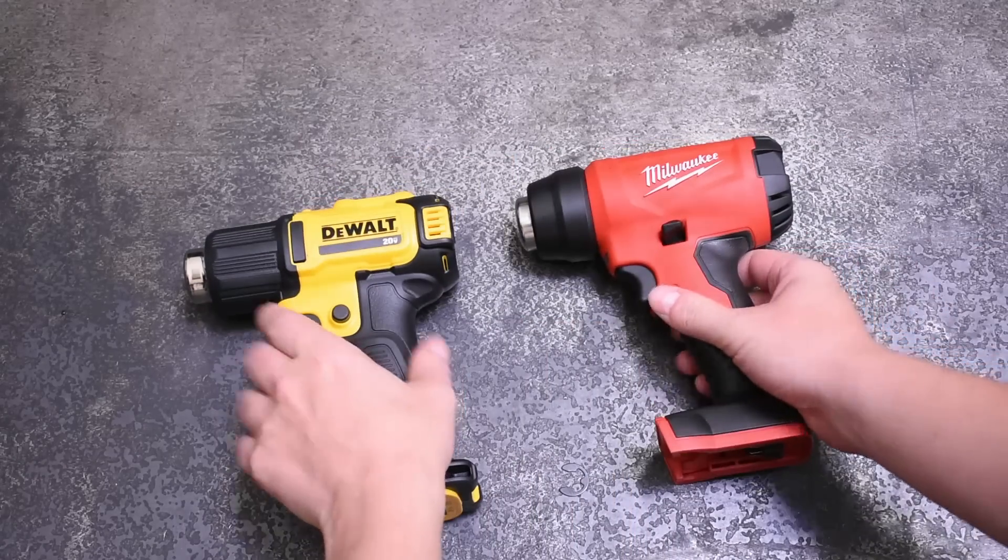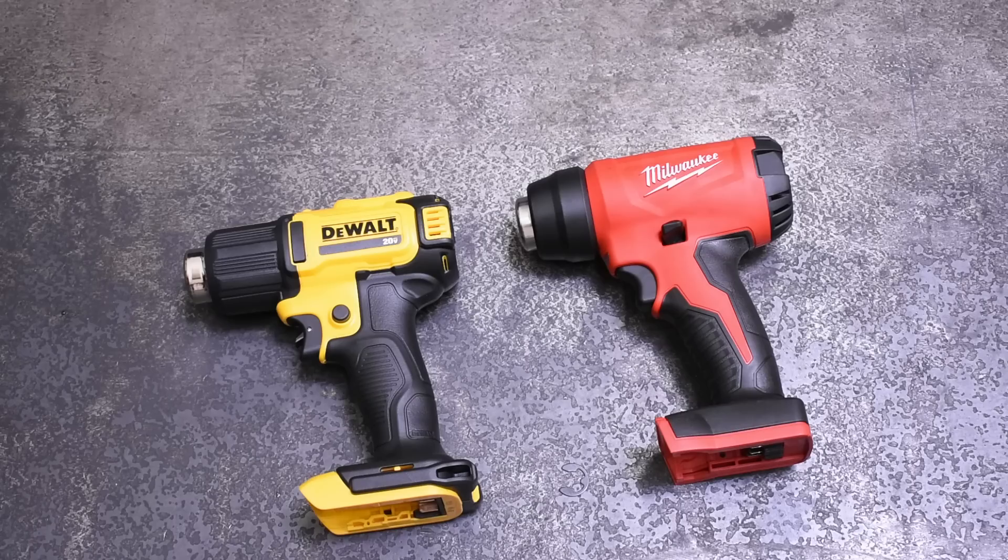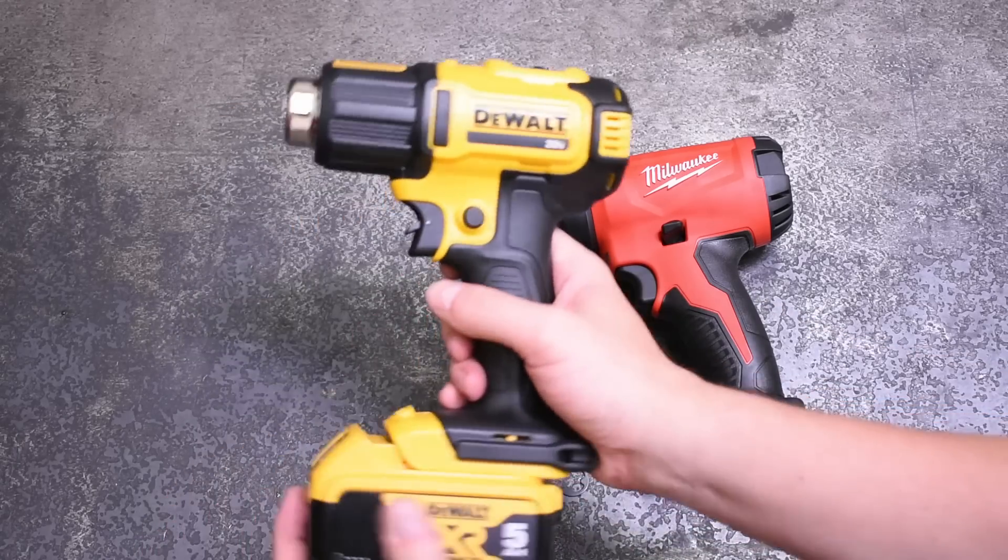So we're going to use the 20-volt Dewalt DCE 530B, which goes for around $105 to $110, and the Milwaukee M18 2688-20, which goes for $130 to $150, to drain batteries in between runs.